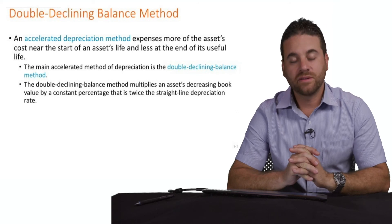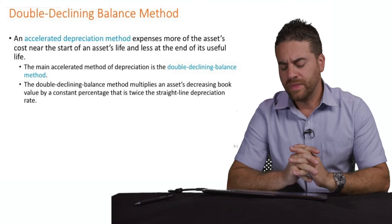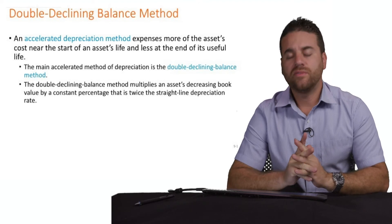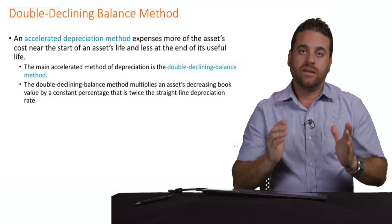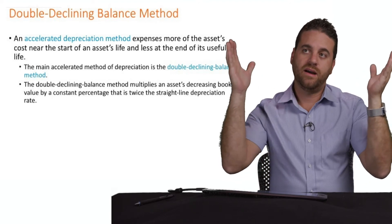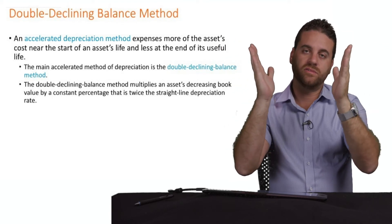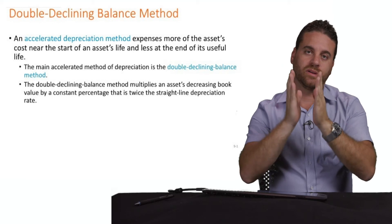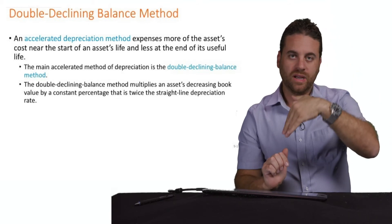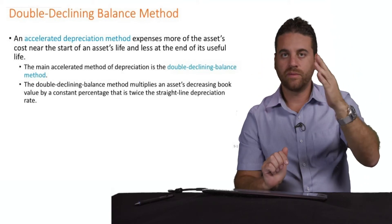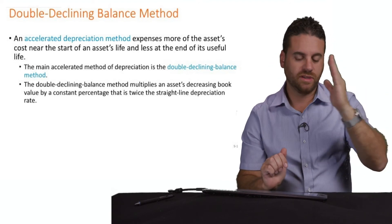We're starting the third method of depreciation: the double declining method. The main difference is that it starts with a high amount of depreciation the first year, then goes lower and lower each subsequent year. The units of production method might be high, low, high, low — no real pattern. And straight-line was equal every year. So double declining starts high.